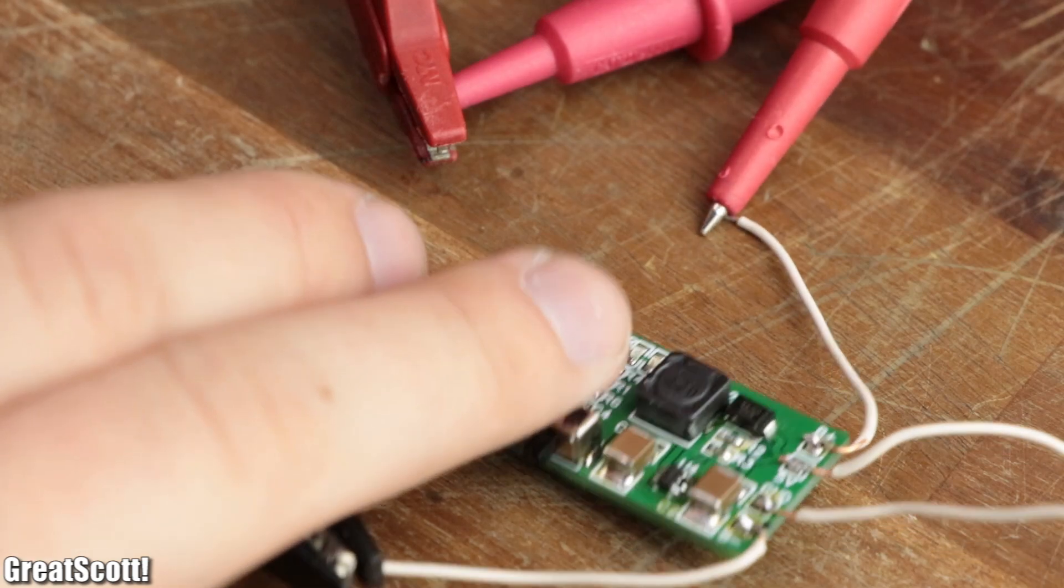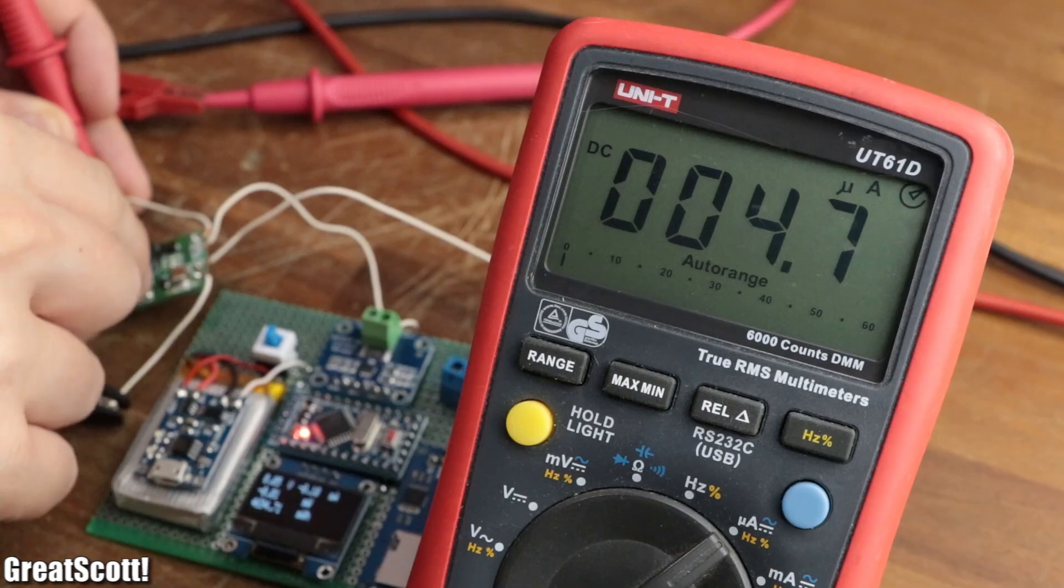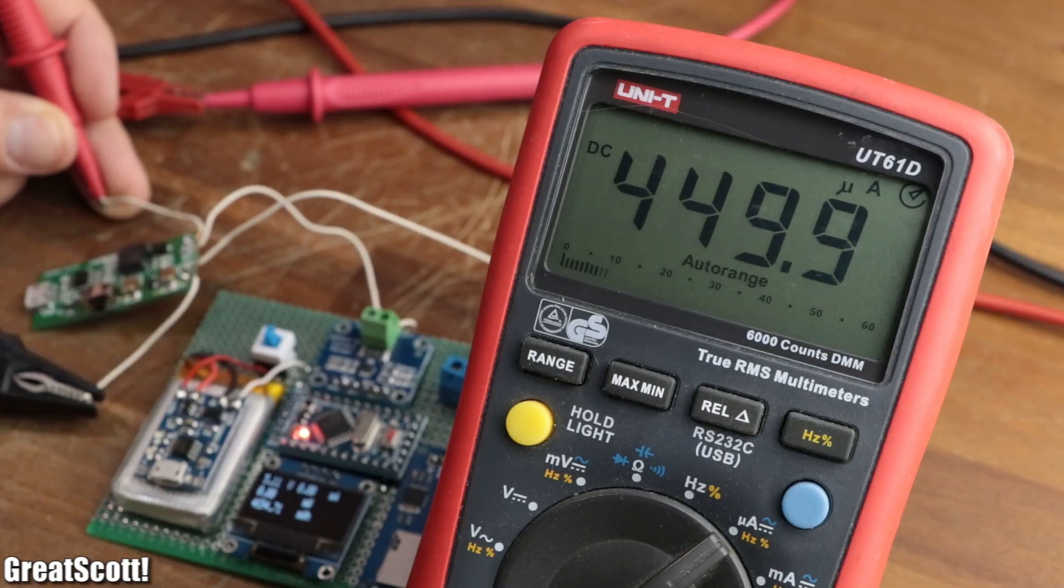And due to its low quiescent current of only 4.7 microamps without the boost converter, it can also safely be used even with small LiPo batteries.